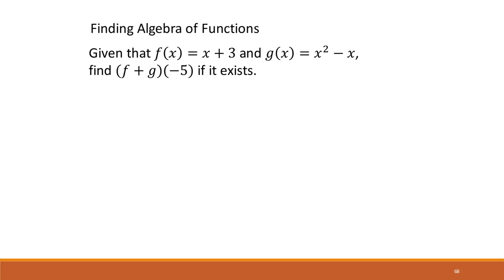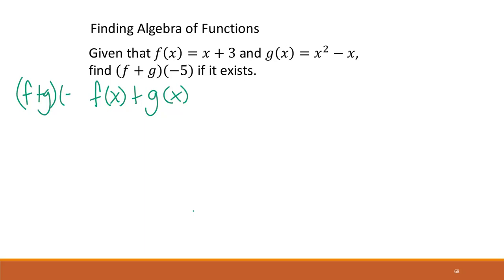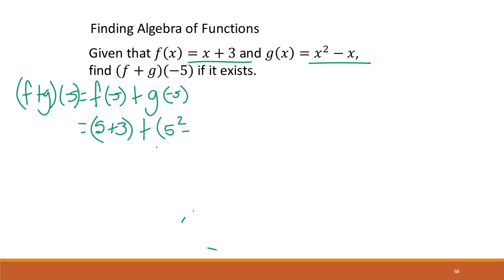Looking at finding algebraic functions — given f(x) = x + 3 and g(x) = x² − x, find (f + g)(−5). We're computing f(x) + g(x) evaluated at −5, so we substitute negative 5 into both functions: (−5 + 3) + (−5)² − (−5). That gives us −2 + 25 + 5.